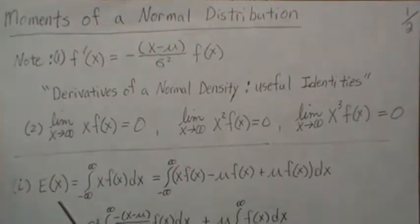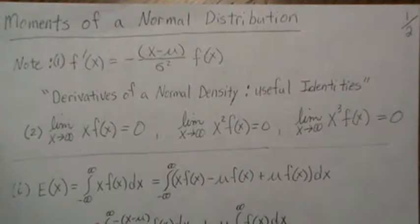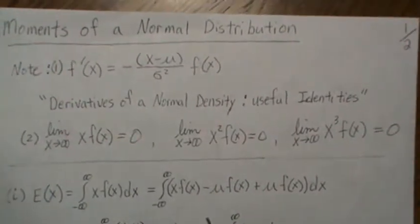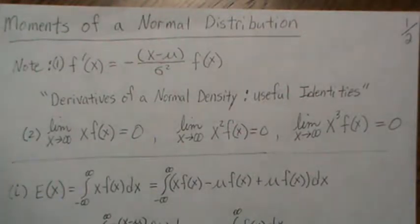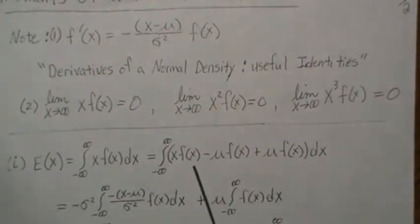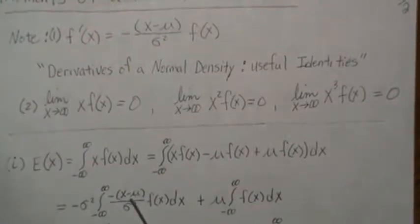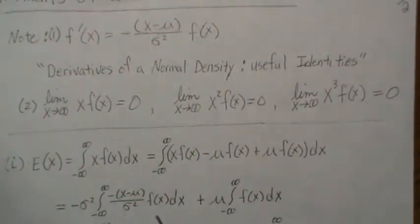Here we have the mean of x, which by definition is x times the density integrated over all possible values of x. Now if we add zero to this it doesn't change the value, so we're going to add and subtract this quantity here. Then we combine these — we factor out f(x), so we're left with (x − μ). Then we divide and multiply by σ² and multiply by minus one twice.